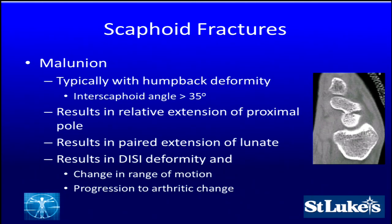Malunion with scaphoid fractures is also quite possible, typically associated with a humpback deformity — that's an intrascaphoid angle greater than 35 degrees. This results in a relative extension of the proximal pole, and because the proximal pole is tightly bound to the lunate through the scapholunate interosseous ligament complex, it's going to cause the lunate to start to rotate distally. That results in a DISI deformity with extension of the lunate and triquetrum, changing range of motion of the midcarpal joint and potentially progressing to arthritic change.